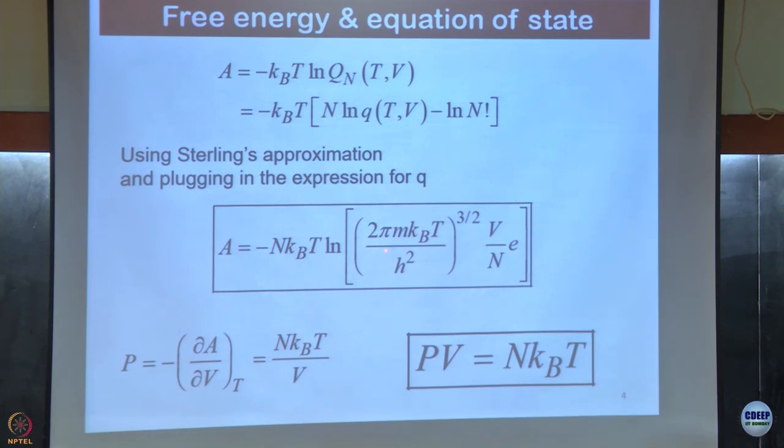If you do that, then all these things, since they are log, all these things do not matter. I just get 1 over v because it is ln v, 1 over v, then this n kBT by v and this PV = NkBT. So this is the ideal gas.